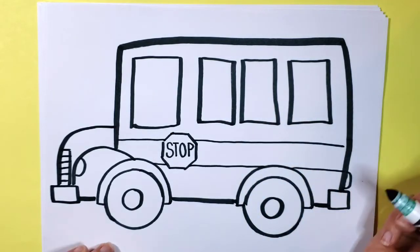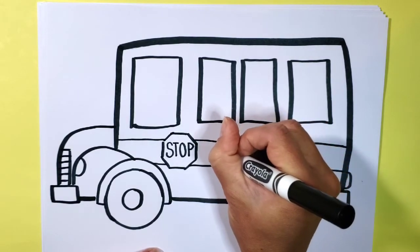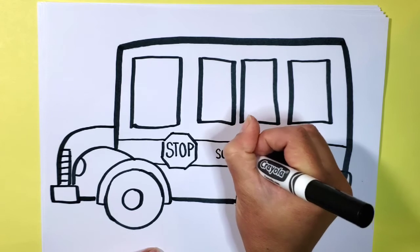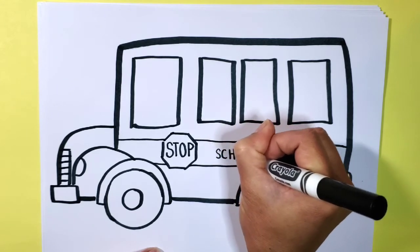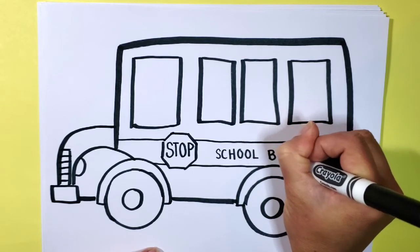If you want to you can write the word school bus on the side because a lot of them usually have lettering on them. So I'm going to go ahead and write school bus just in case you weren't sure what it was.